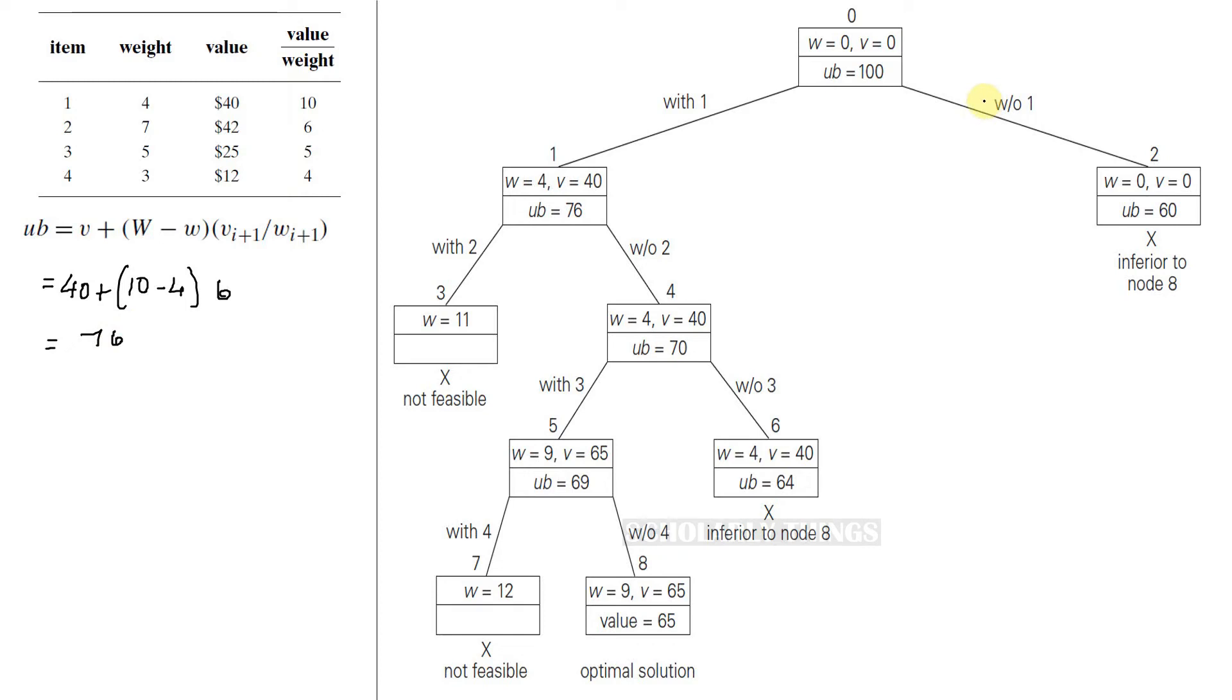We need to check the other branch as well, without including item 1. Without including item 1, the weight is 0 and the value is 0. So the upper bound will be 0 plus 10 minus 0 into 6. It will be 60. Among these two nodes, 76 is greater. So let's go with this node and branch out.